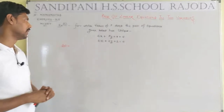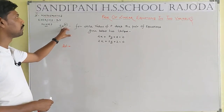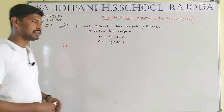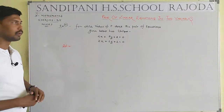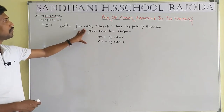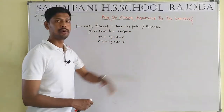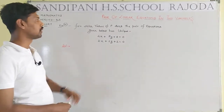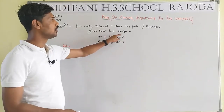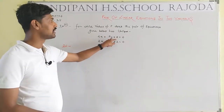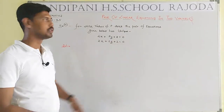Today we take Example number 15 first, and then after we will study the exercise number 3.5. What is the demand of the question? For which value of p does the pair of equations — 4x plus py plus 8 equals 0, and 2x plus 2y plus 2 equals 0 — have a unique solution?